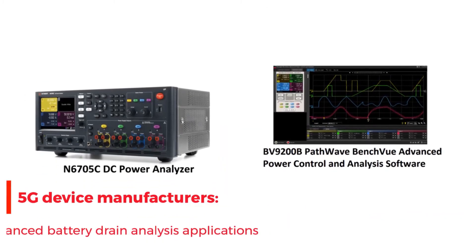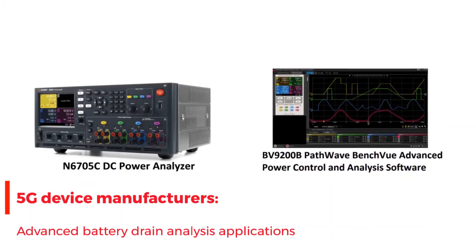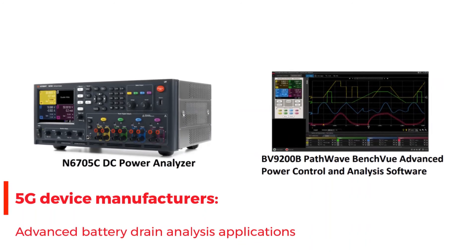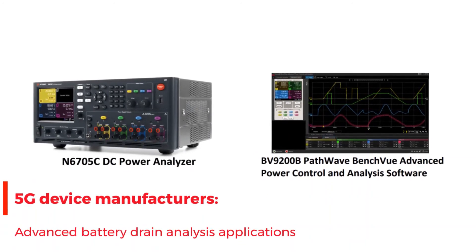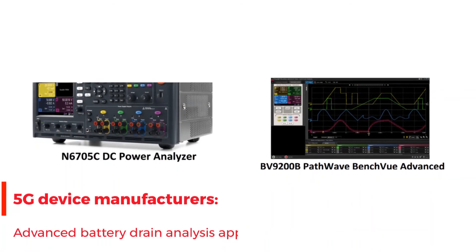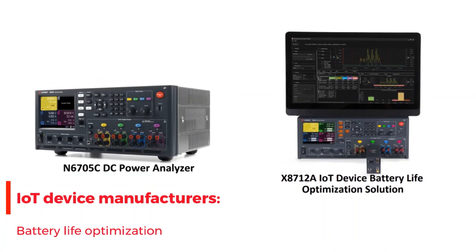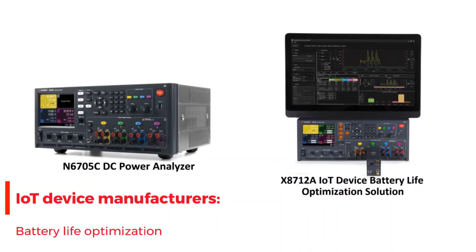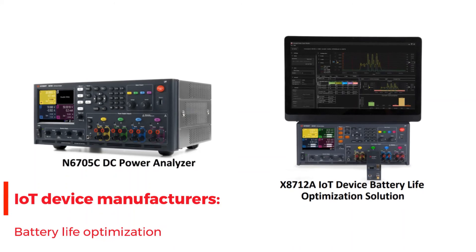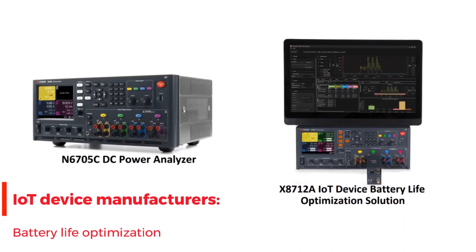For example, it can be used with Keysight BV9000B Advanced Power Control and Analysis Software. This setup is used by 5G device manufacturers for advanced battery drain analysis applications. It is also a key component of the X8712A battery life optimization solution, and it helps IoT manufacturers to accurately view charge consumption profiles.